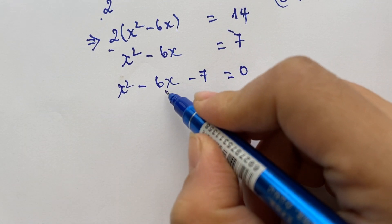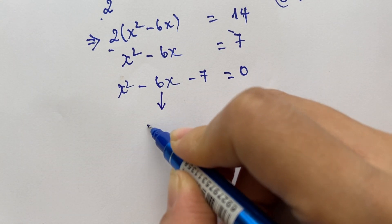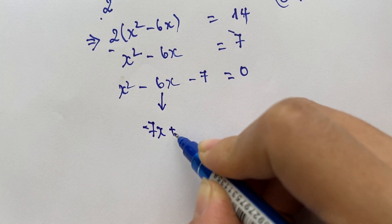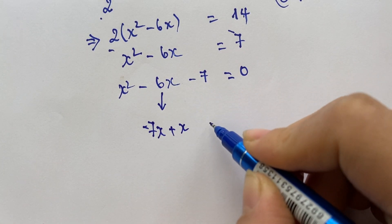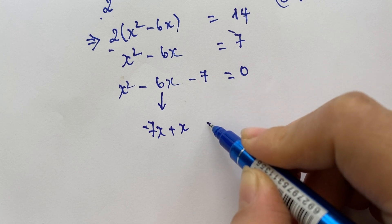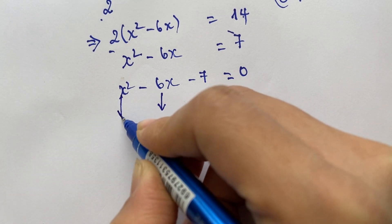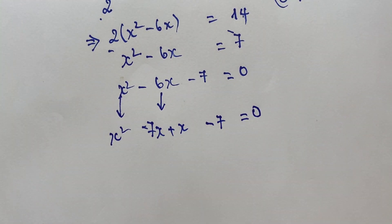You can break this down by factoring. Split -6x as -7x plus x, giving x squared minus 7x plus x minus 7 equals 0.